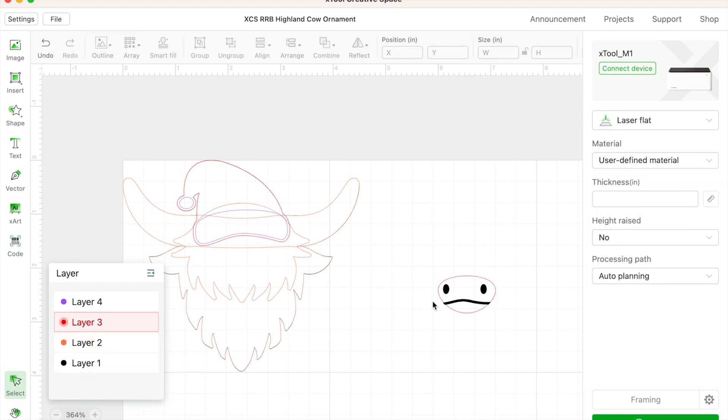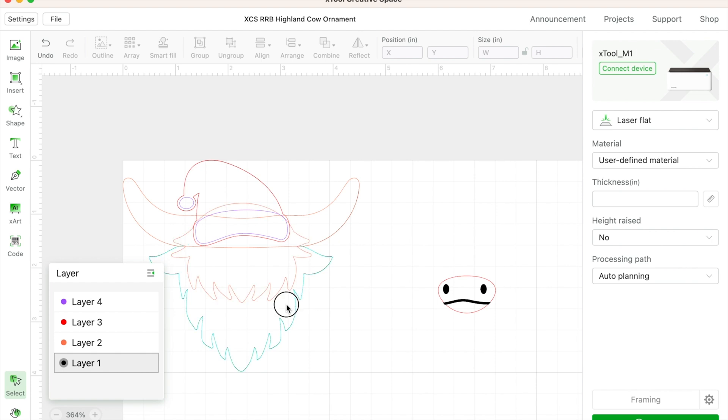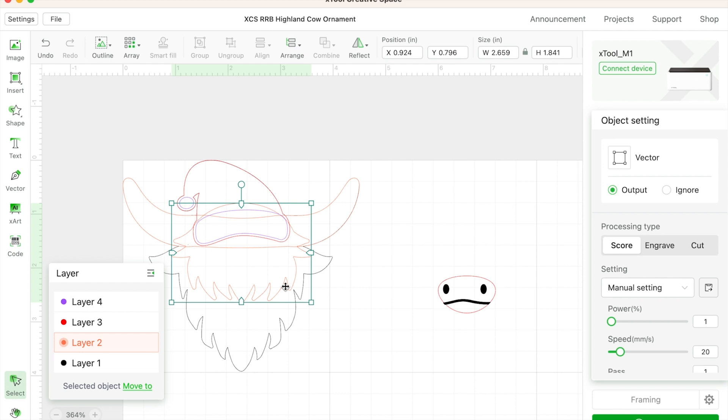Now you can put all three of these pieces for the face united and just set them to engrave. The outside will be cut. Now I like my cuts to be on a red layer. Engrave can be on any color layer you'd like. This is just so you can keep it clear in your head.